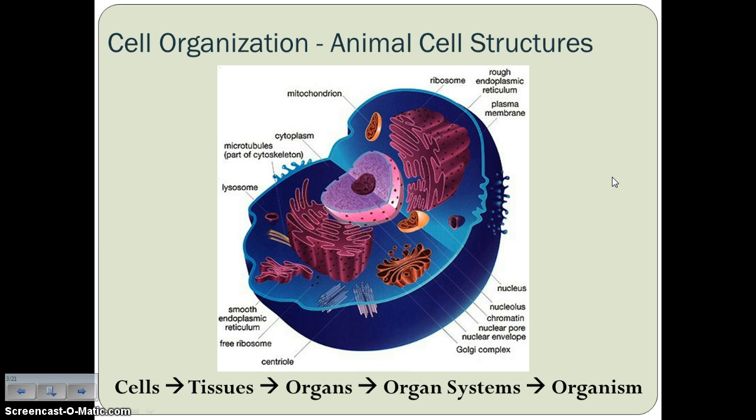The cell parts for the animal cell that you're going to be responsible for knowing: the big ones are the cell membrane, which is the outer layer of the animal cell. Also lysosomes — if you remember from last semester, those are organelles that animal cells have that plant cells don't have.